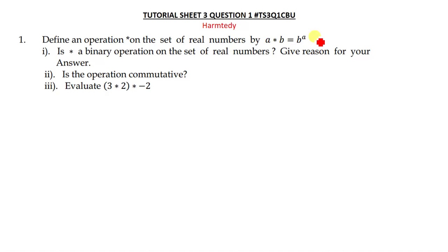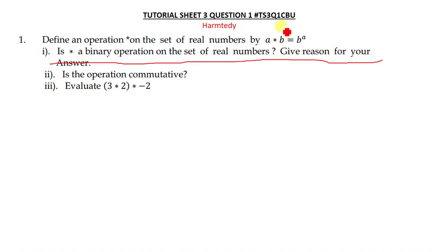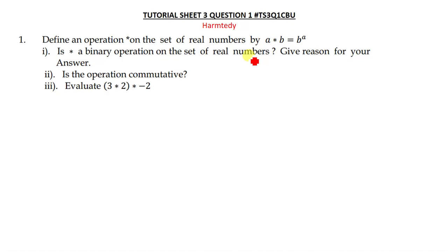You test the right-hand side by plugging in any real number from the given set and seeing whether any answer you get is undefined. In other words, they are asking: is there a way to make this operation undefined using real numbers? If there is no way, then star is a binary operation on the set of real numbers.